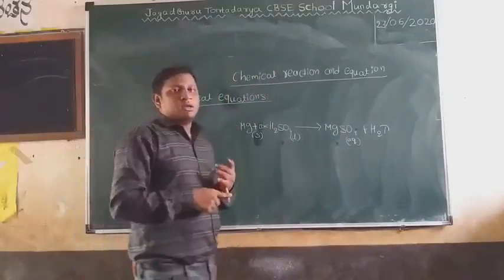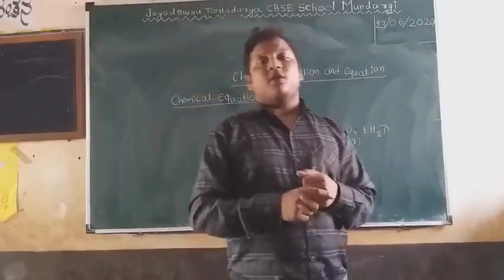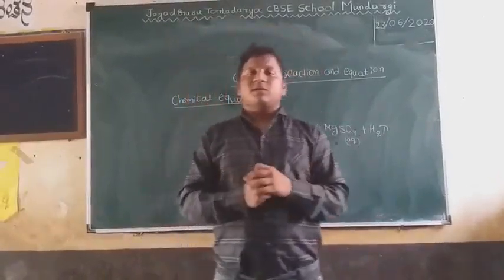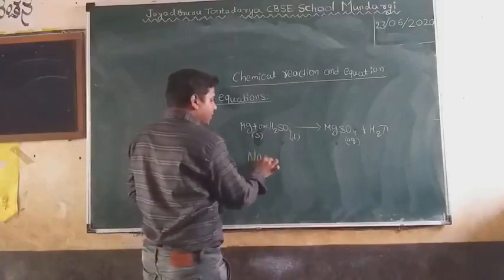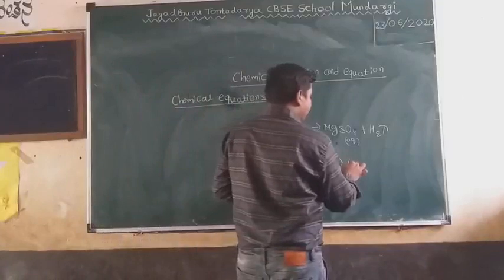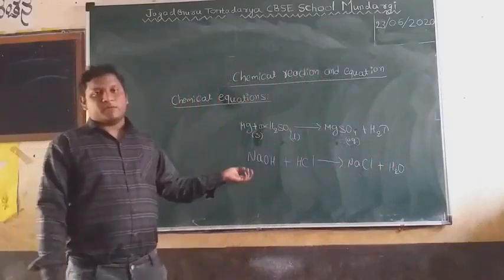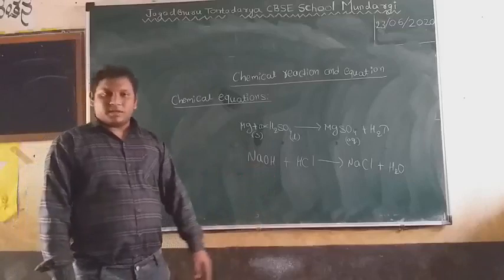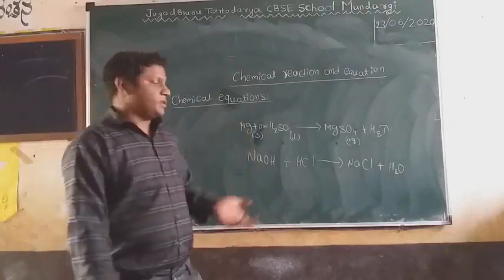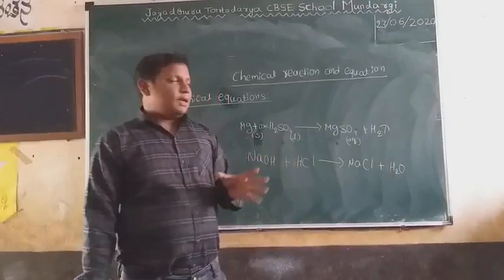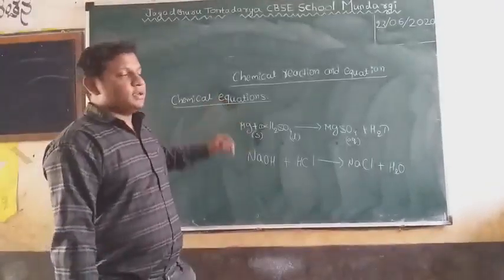Take one more example: when sodium hydroxide reacts with hydrochloric acid, it forms sodium chloride with the liberation of water. This is also one equation, but I can also write it in equation form: NaOH reacts with HCl to give NaCl and H2O. In the equation, we can easily find out what atoms are present, what the valences are, how the product is formed, and whether it forms a precipitate or not.